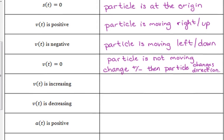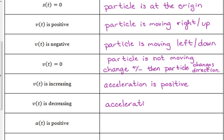Now let's look at two more cases with the velocity. If your velocity is increasing, then your acceleration is positive. That goes back to the PVA relationship — acceleration being the derivative of velocity. So if the velocity is increasing, it has positive slope, meaning acceleration is positive. And if your velocity is decreasing, then your acceleration is negative.